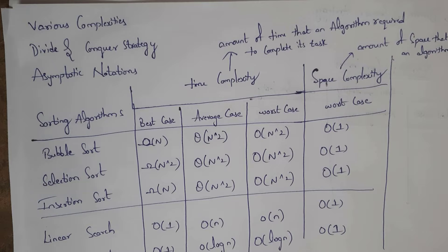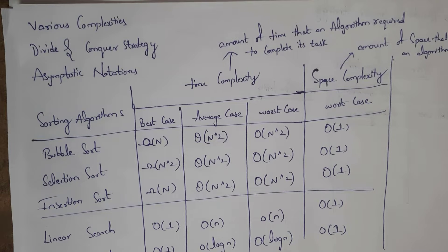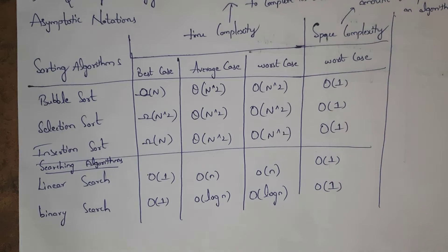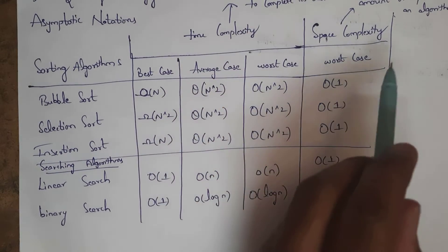First, I will explain various complexities of sorting algorithms. Complexities are classified into two types: time complexity and space complexity. Time complexity means the amount of time that an algorithm requires to complete its task. Similarly, space complexity means the amount of space that an algorithm requires. These are various algorithms and their time and space complexities.